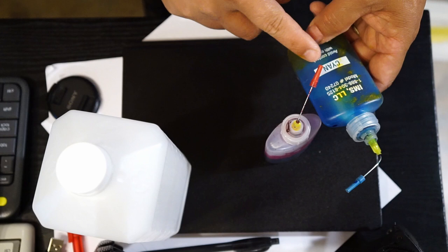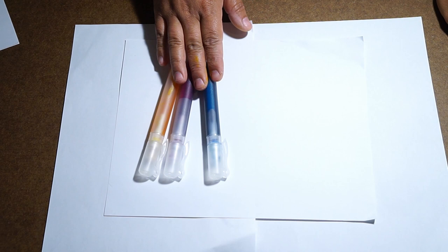Okay, here's the portable paint sprayer. As you can see, I have the blue, the magenta red, and the yellow. Here's the piece of paper that I will spray on to.